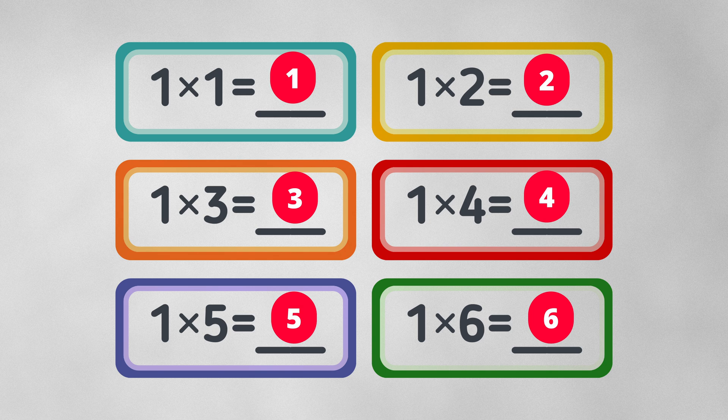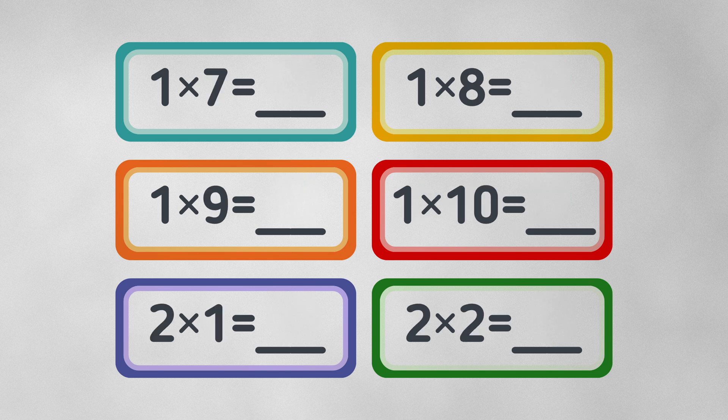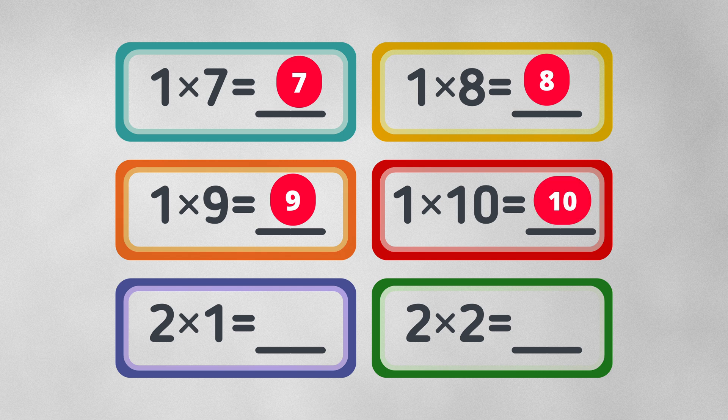1 times 7 equals 7. 1 times 8 equals 8. 1 times 9 equals 9. 1 times 10 equals 10.